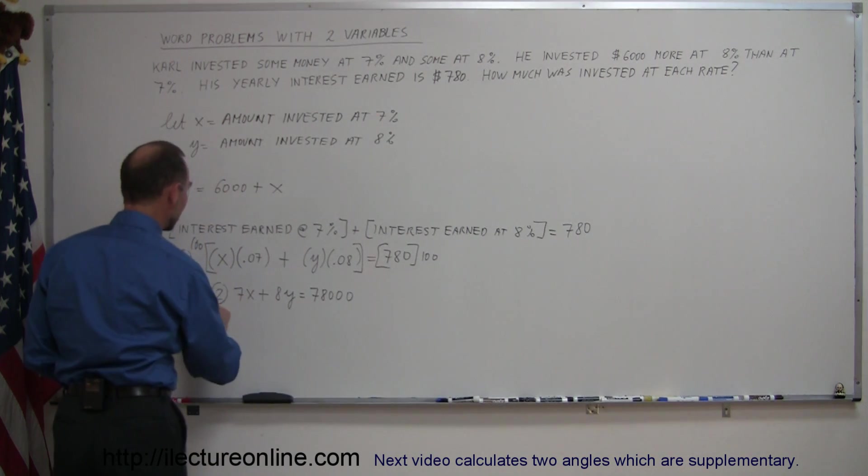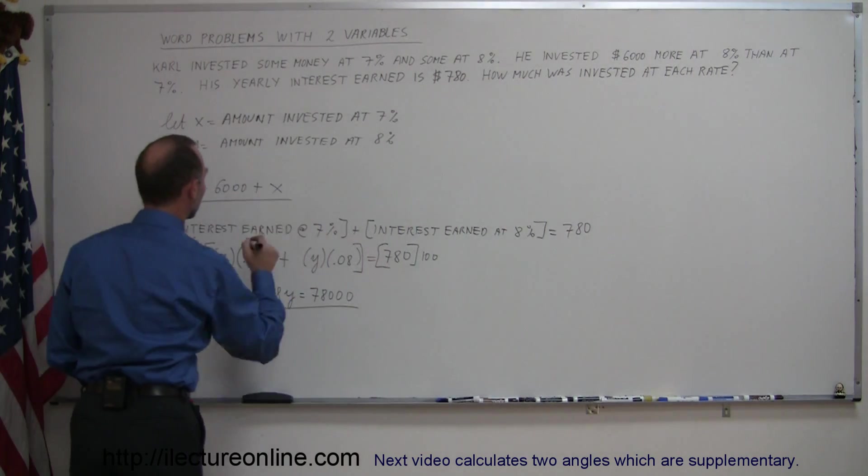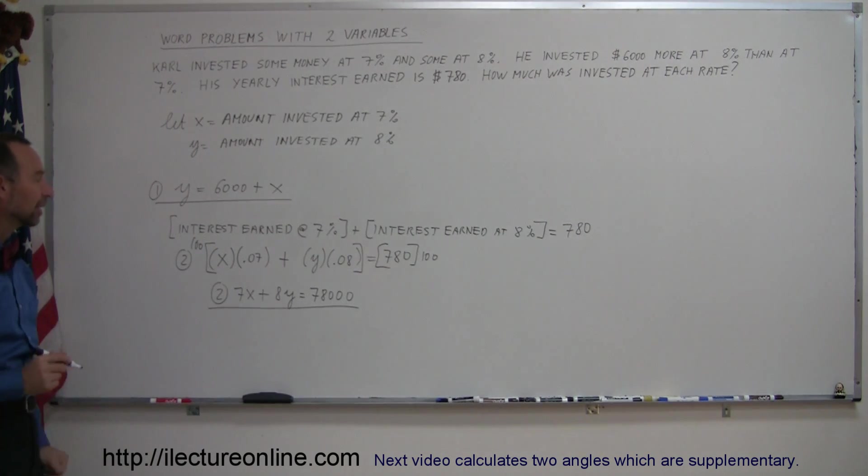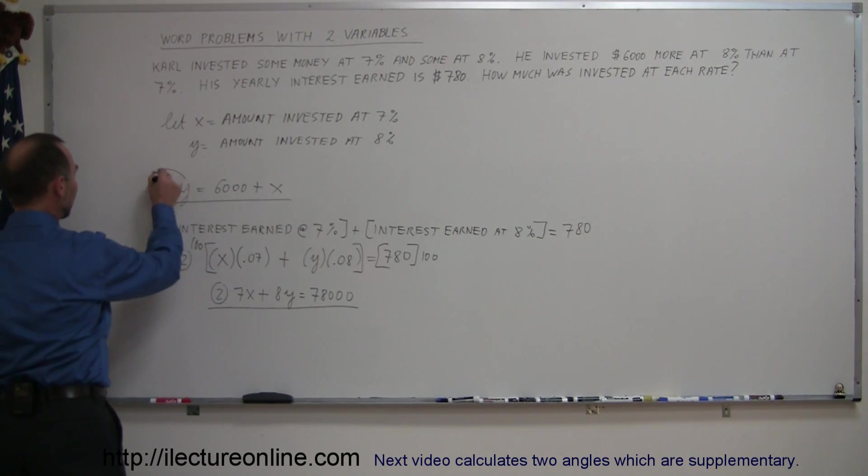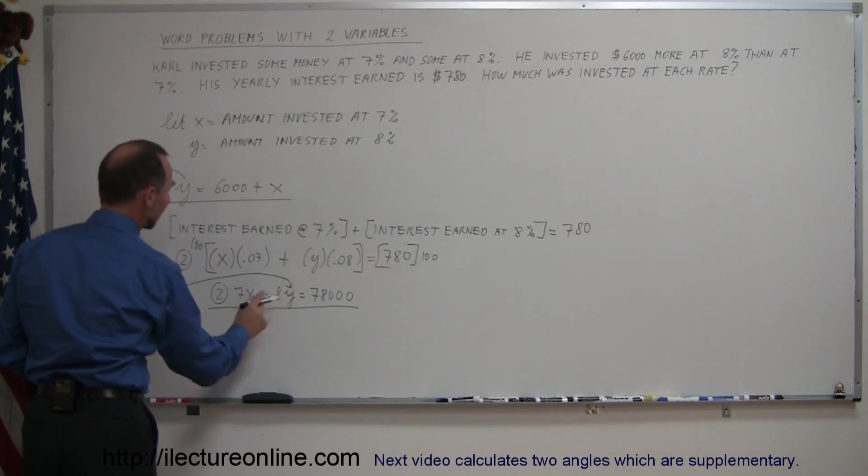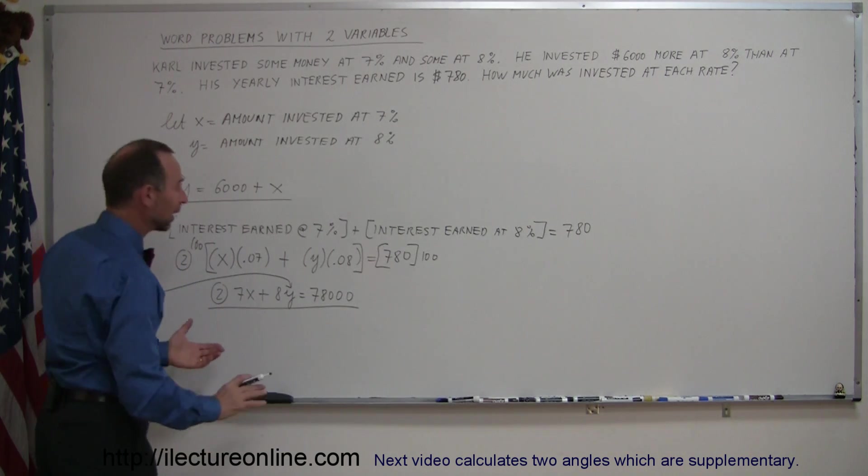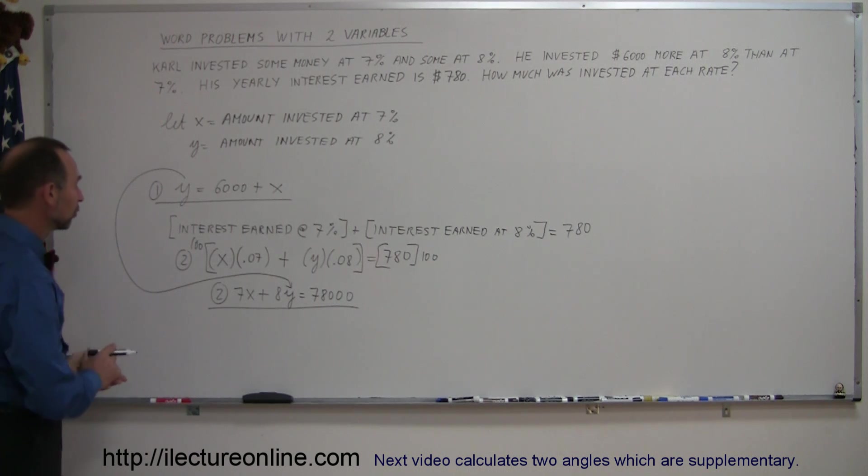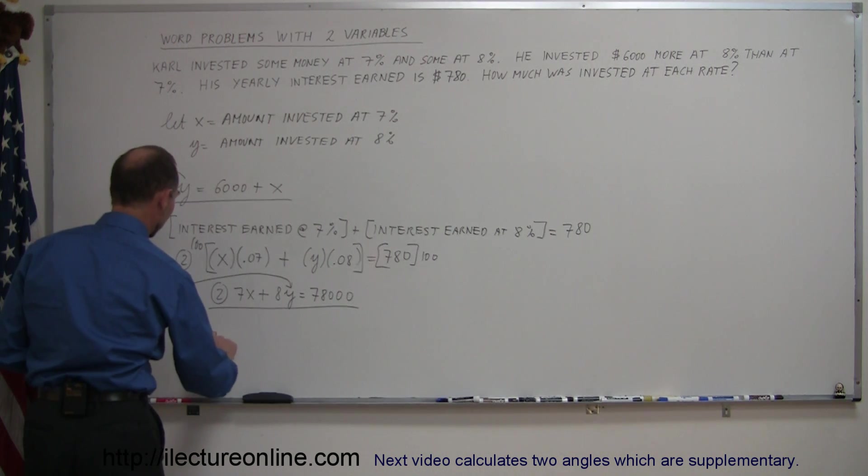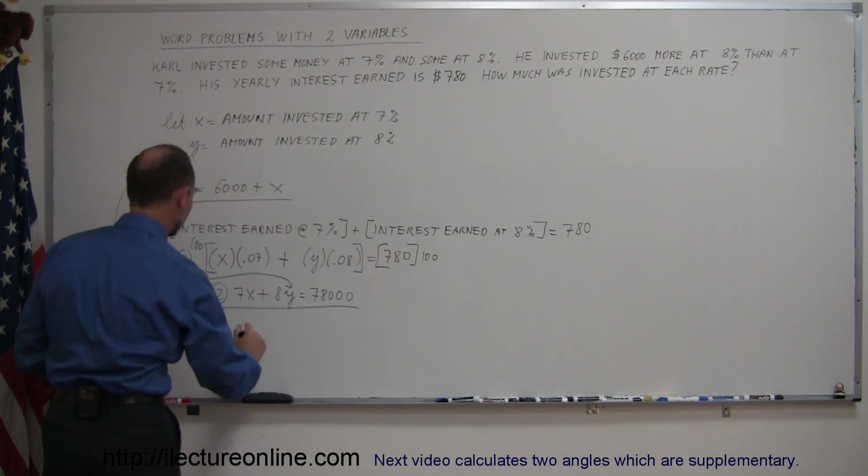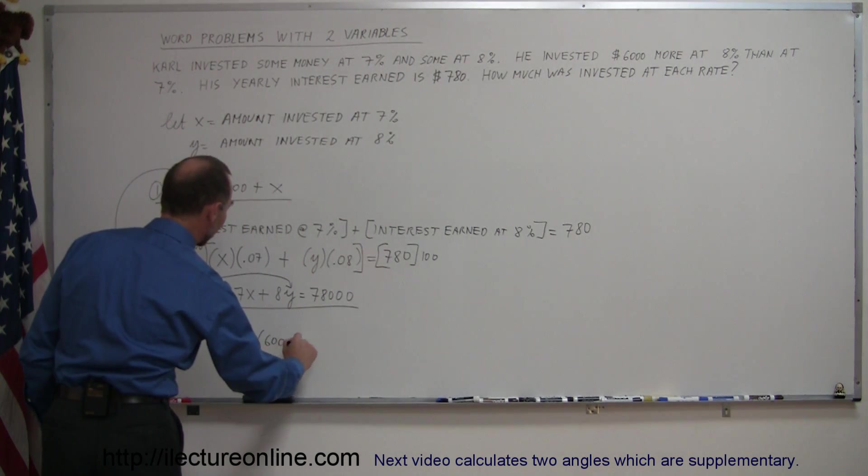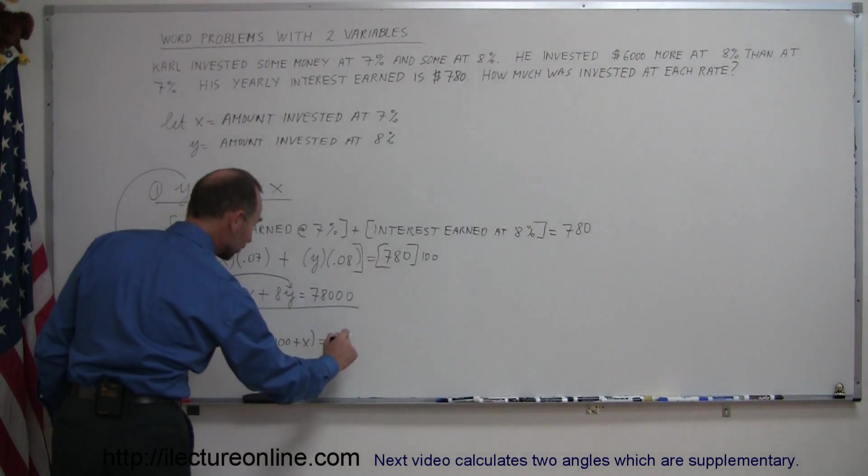Now I have a better form of equation number 2 and I have equation number 1, so I can solve those two equations simultaneously. A good method here would be to use the substitution method because this is already expressed as y in terms of x. If I take this value for y and plug it into here, I can eliminate the variable y and only have one variable with one equation. So my equation number 2 now becomes 7x plus 8 times, instead of writing y, we're going to write what y is equal to, which is 6,000 plus x, and that equals 78,000.